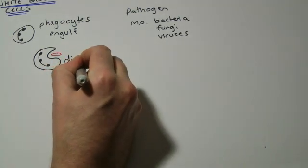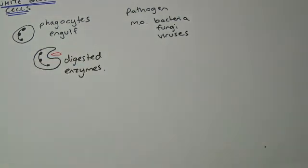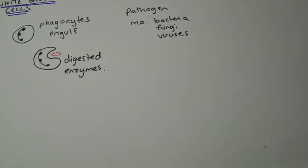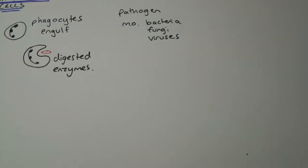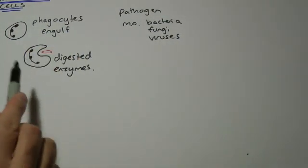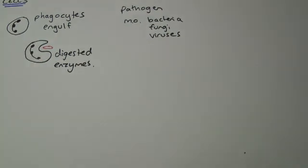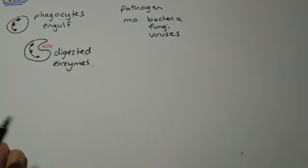Now this is okay, it works fairly well. About 70 plus percent of all the white blood cells in your body are actually this simple type of phagocyte. However, there's another system which is a little bit more complicated.